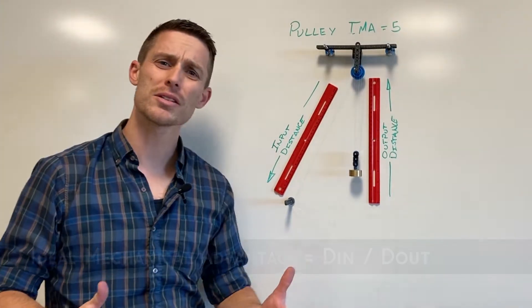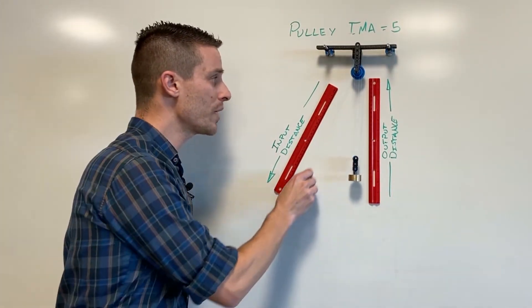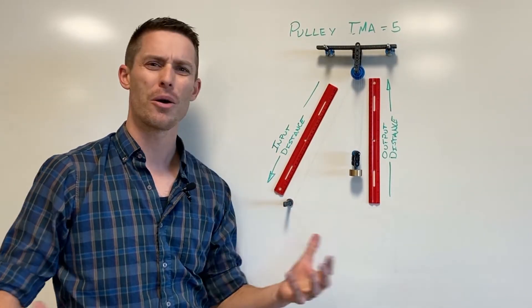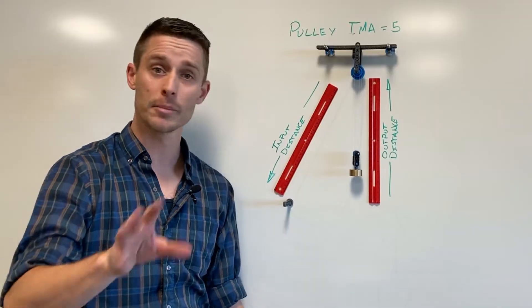Now you look at this and go why on earth would we have to pull something 30 centimeters in order to only have it move six centimeters? What kind of a crap deal is that? And let me explain.